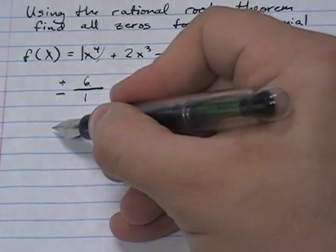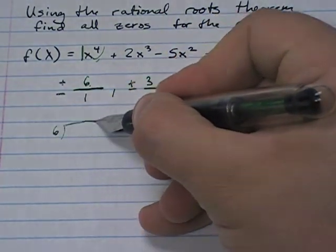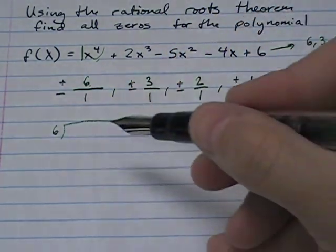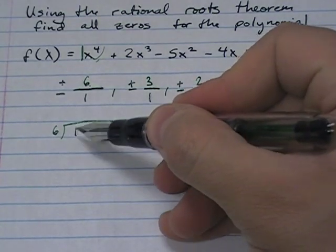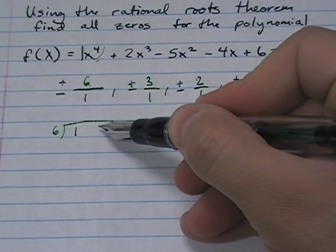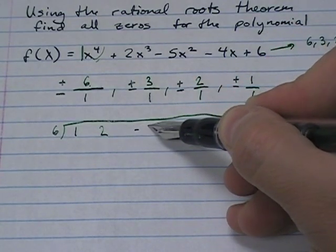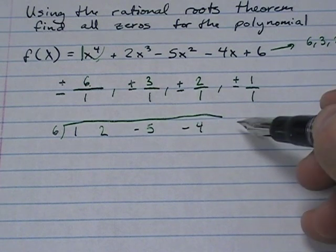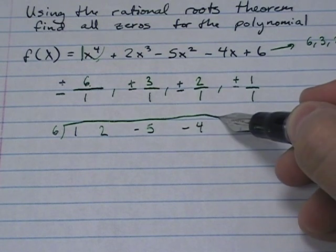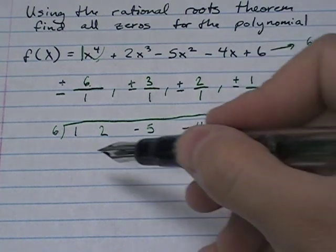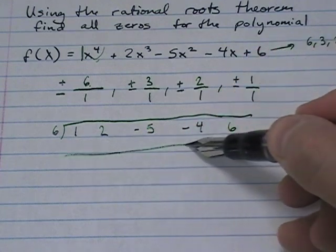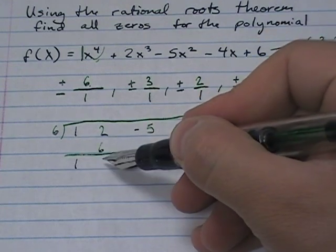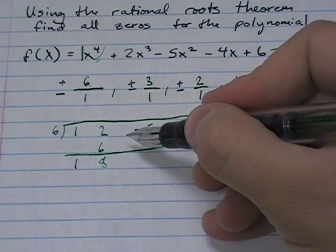I'm going to start with a simple one — I'm going to start with six. The way to do this is to use synthetic division. We write the coefficients: x to the fourth, two x to the third, negative five x squared, negative four x, and plus six, then divide synthetically by six.